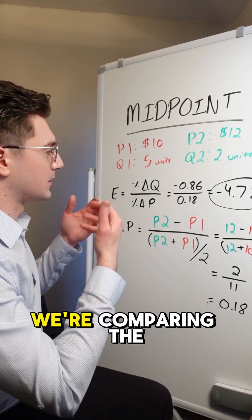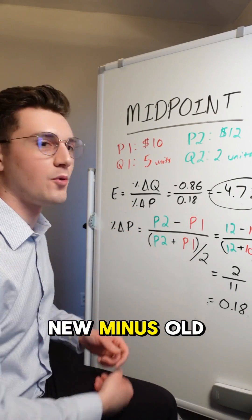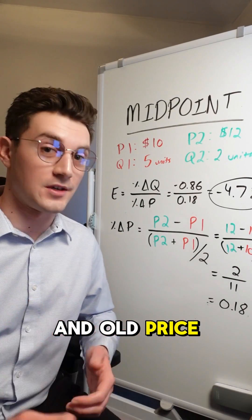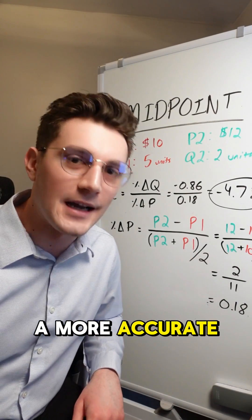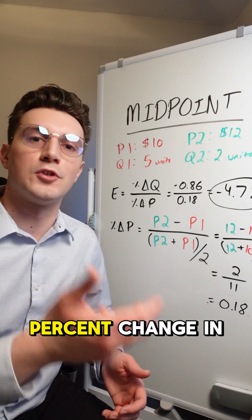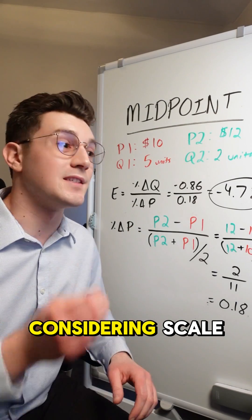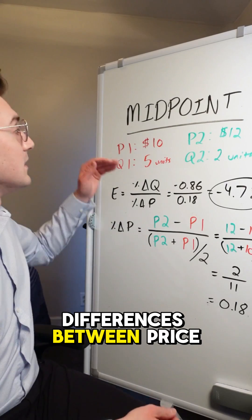look at the denominator right here. We're comparing the new minus old prices or quantities to the average of the new and old price or quantity. It gives us a more accurate read on the true percent change in price or quantity, not as heavily considering scale differences between price and quantity.